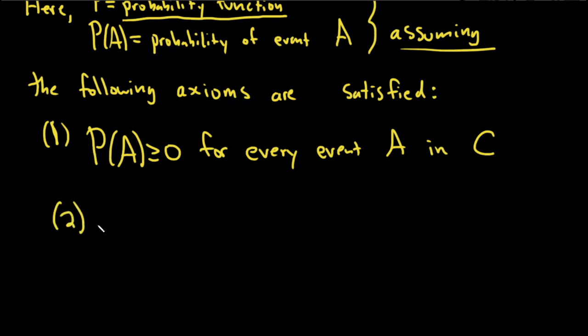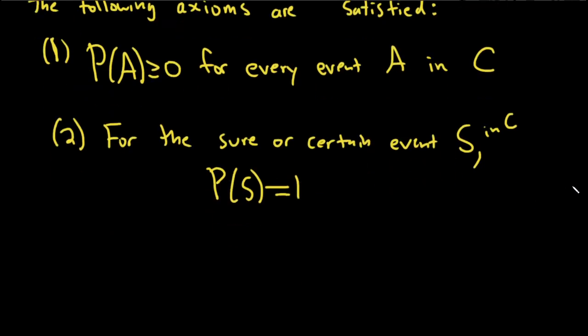Axiom two: we're going to say that for the sure or certain event S, P of S is equal to one, and S is in C.